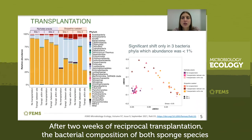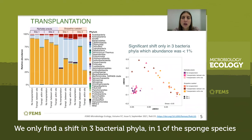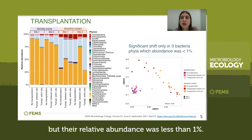After three weeks of reciprocal transplantation, the bacterial composition of both sponge species did not show a clear community shift either. We only found a shift in three bacterial phyla in one of the sponge species, but the relative abundance was less than one percent.